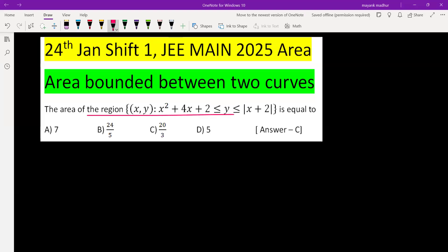The area of the region which is the collection of all (x, y) satisfying two inequalities: one is x² + 4x + 2 less than or equal to y, and the other is y less than or equal to |x + 2|.